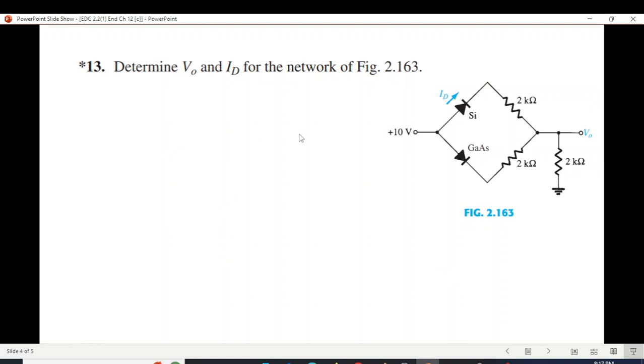Question number 13. Slightly tricky but we'll make it easy. This is the circuit and here also the logic is same that 10 volt positive is being applied here and touching positive of the silicon diode and also touching positive of the gallium arsenide diode.